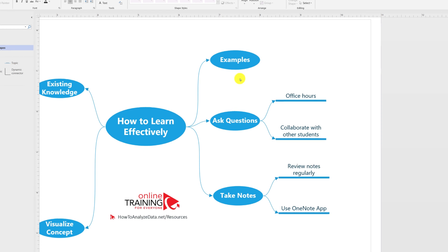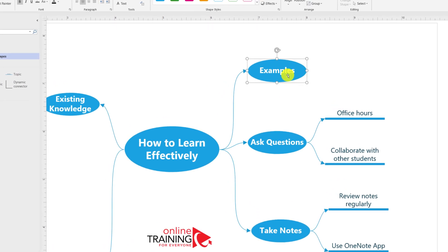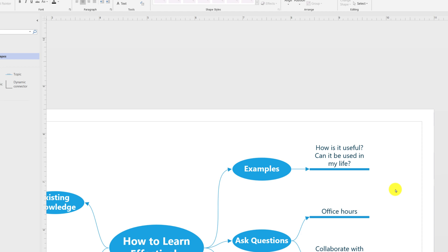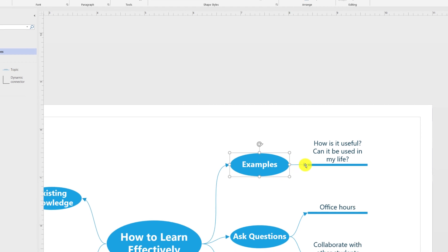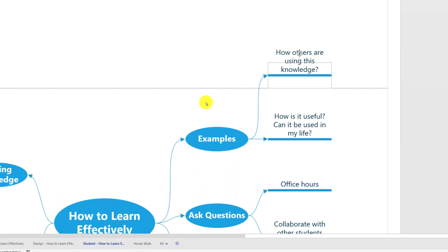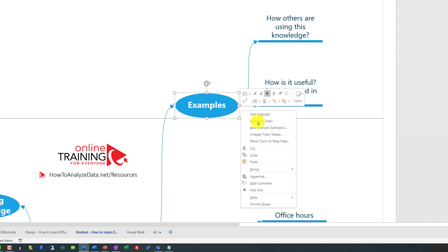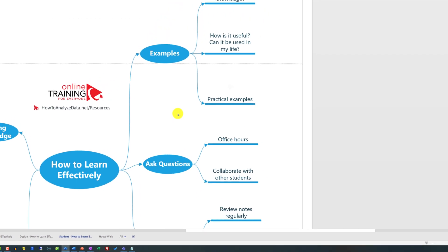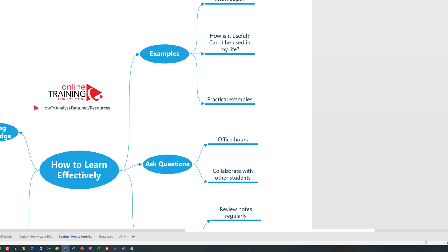And last but not least, a way of improving your knowledge is constantly looking for examples. For example, what I like to do is I constantly ask myself a question: How is this useful? Can it be used in my life? How are other people using this knowledge? Can I learn something from them? And what are the practical examples of implementing this concept as something useful in the real world?